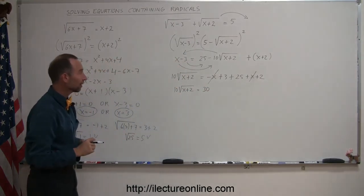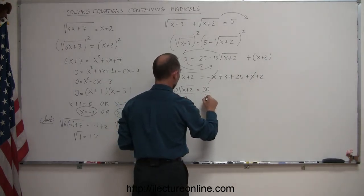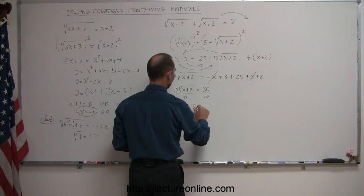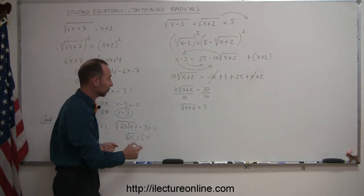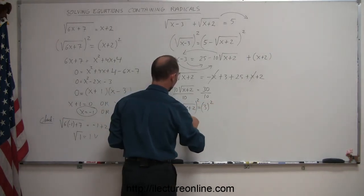All right, that looks a little better. Now let's divide both sides by 10. To get rid of the 10 here, so we have the square root of x plus 2 is equal to 3. And now we go ahead and square both sides again. So we square the left side.